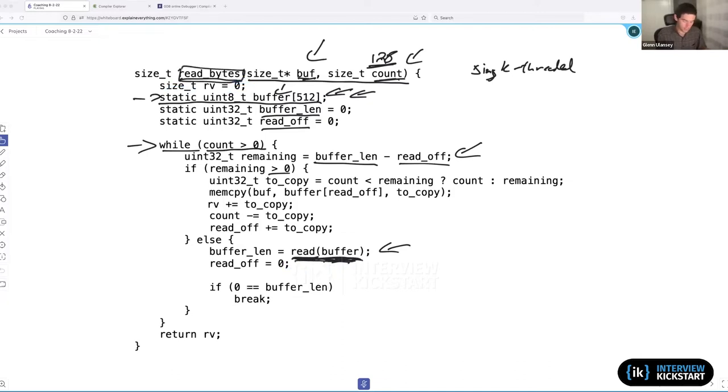We pass in our buffer and we store how much data we got back in our static variable buffer_length. Buffer_length is going to be any number between zero and 512. Now that we've just read this data, the read offset is zero. We've just acquired the data from the peripheral; we have not yet returned any data to the person who calls read_bytes.